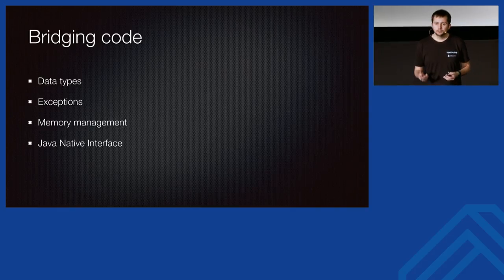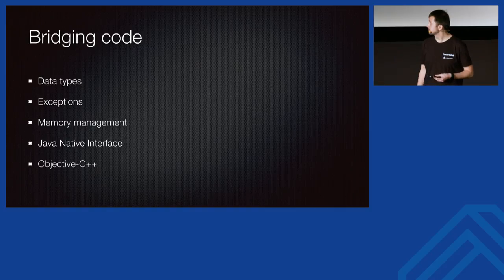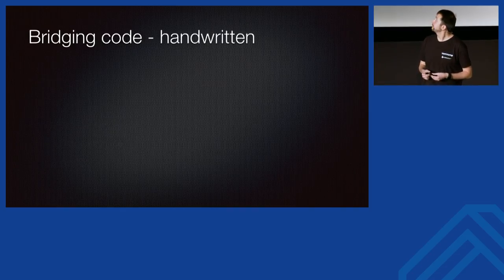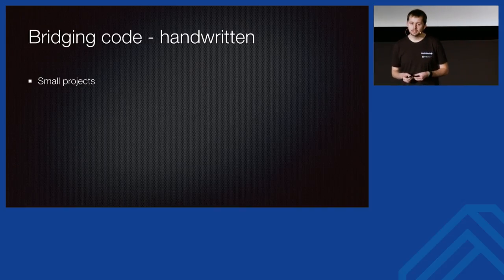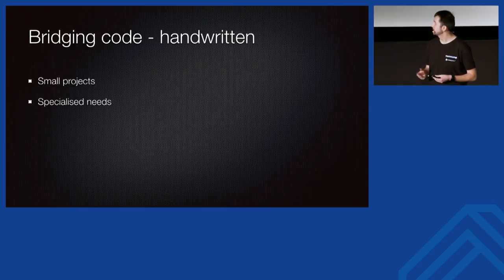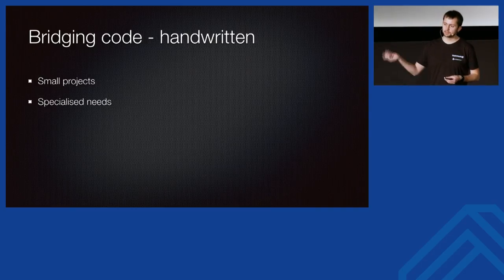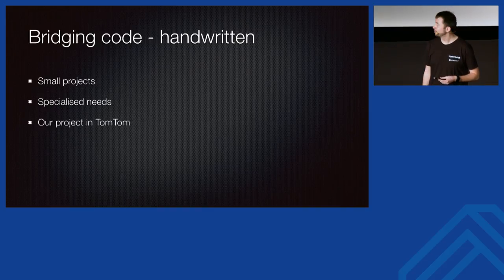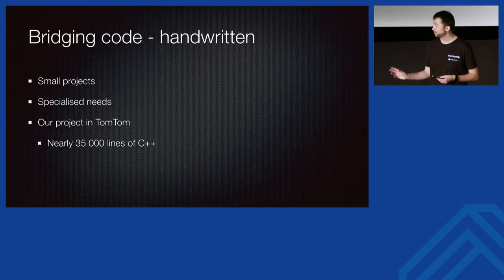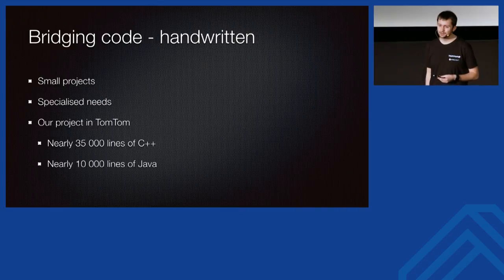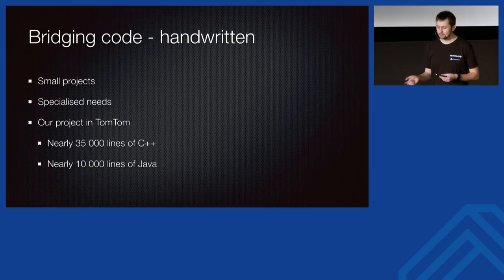Java Native Interface lets C++ and Java communicate; Objective-C++ lets Objective-C and C++ communicate. You may hand-write this bridging code, which is fine for small projects or special needs. But at TomTom we have nearly 35,000 lines of C++ in this bridging layer and nearly 10,000 lines of Java — nobody wants to write that by hand, especially since it can be quite error-prone.